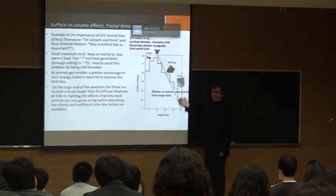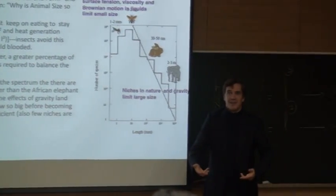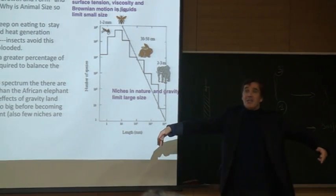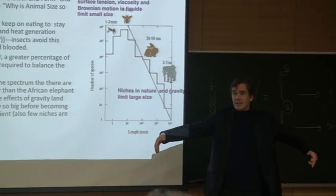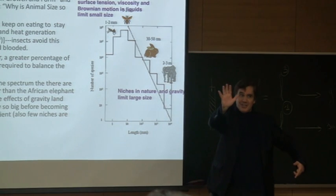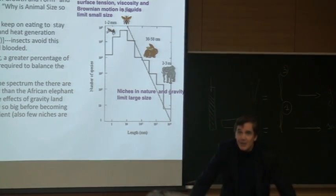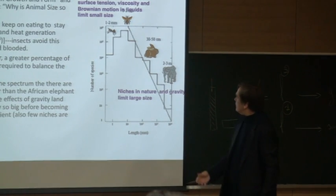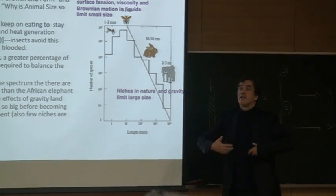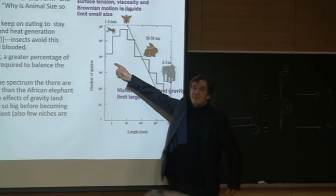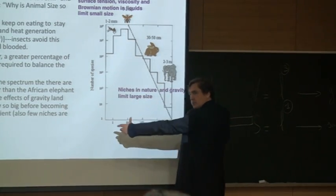Think about whales — water supports them. If you make animals too large, think about the dinosaurs, they pushed the boundary because gravity would just squash them down. But in the water you can have larger creatures and smaller creatures. So this curve in water is actually broader on both ends.